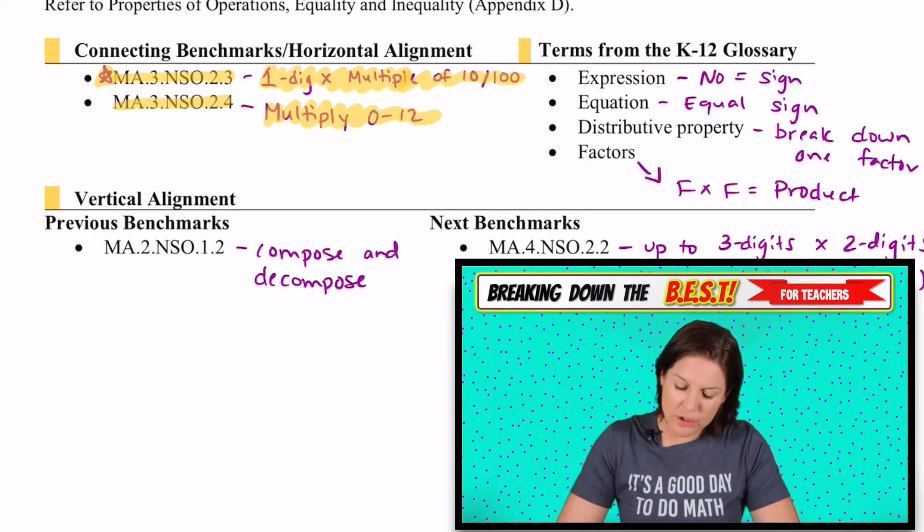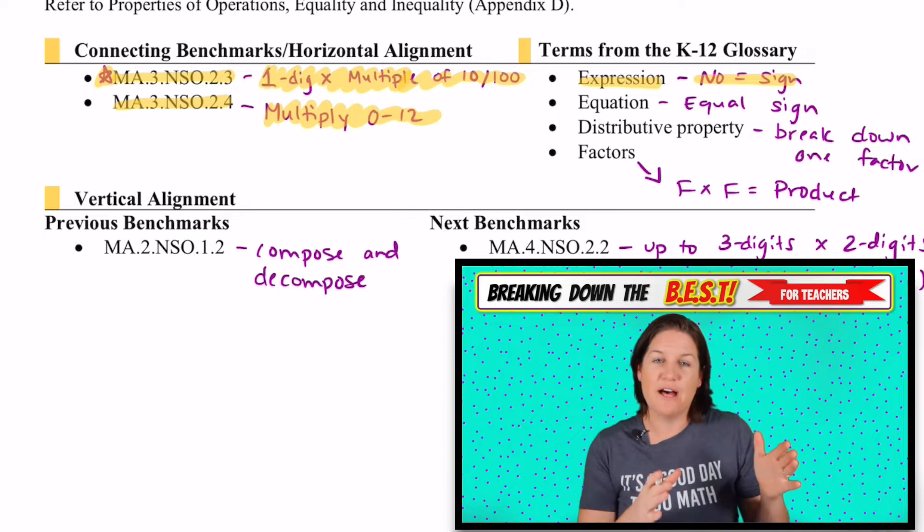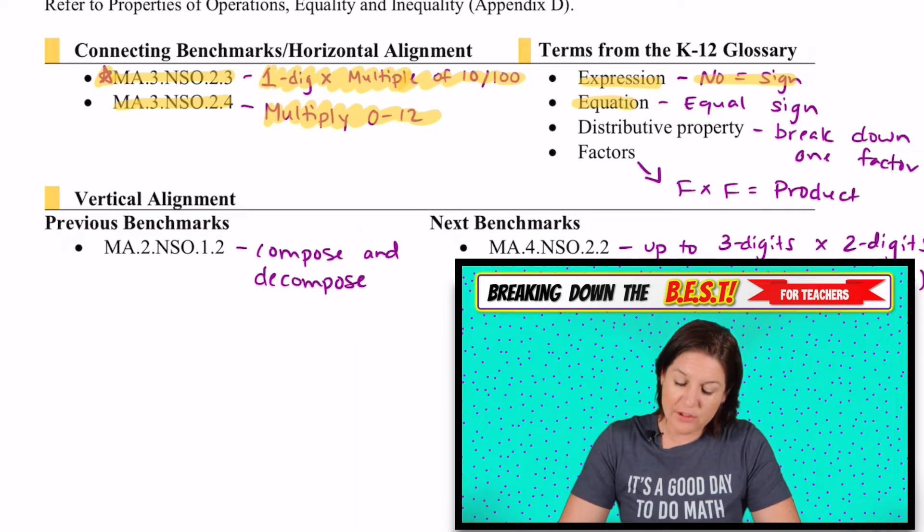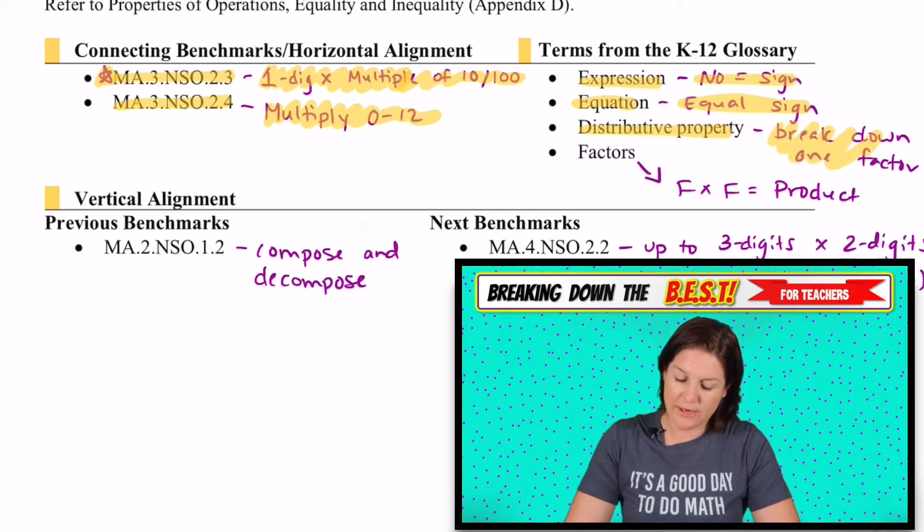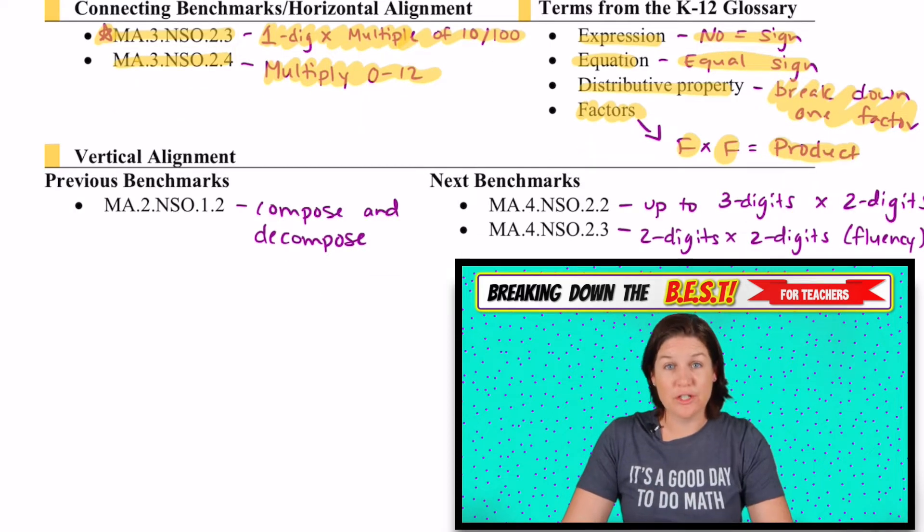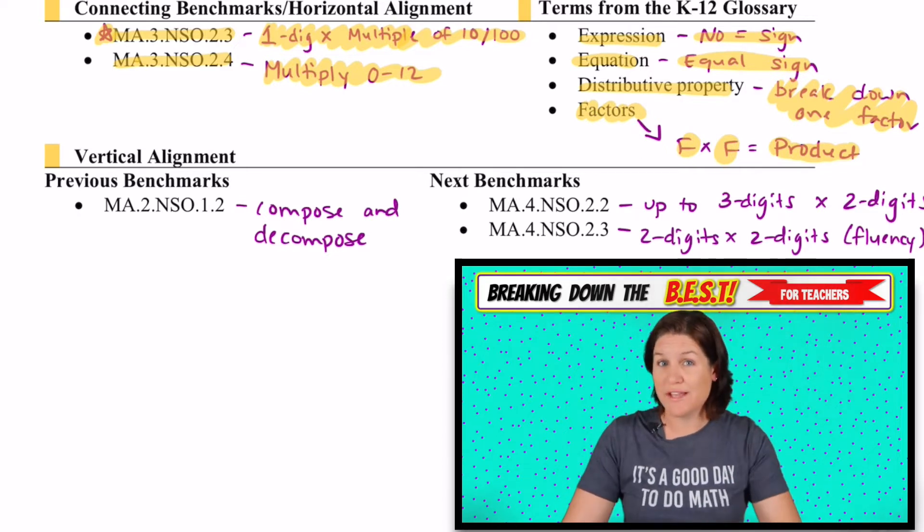Let's go over to some terms that you need to make sure that you know and that your students know the term expression. Expression means that there is no equal sign. There actually might be an equal sign present, but we're not focusing. We might be focusing on the value to the left or to the right of an equal sign if that's the case. An equation means that there is an equal sign present and the distributive property is where we break down one factor. We talked about that. And factors are what you are multiplying by. You multiply factors by factors to get products. So we need to make sure that we are constantly using and expecting our students to use that vocabulary too.